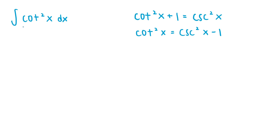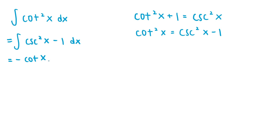Here's how we do the integral of cotangent squared of x. If we consider the identity cotangent squared of x plus 1 equals cosecant squared of x and subtract 1 on both sides, we get the identity cotangent squared of x equals cosecant squared of x minus 1, so we can rewrite the integrand as cosecant squared of x minus 1. The integral of cosecant squared of x is negative cotangent of x, because the derivative of cotangent of x is negative cosecant squared of x, which is a standard derivative. Since we're integrating cosecant squared of x instead of negative cosecant squared of x, the result is off by a factor of negative 1. The integral of negative 1 is just negative x, so the integral of cotangent squared of x is negative cotangent of x minus x plus the constant of integration C.